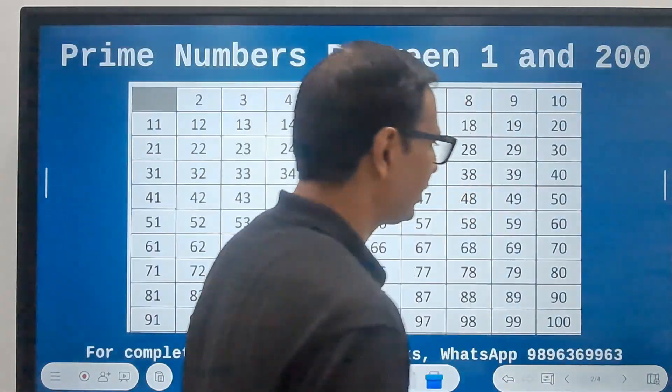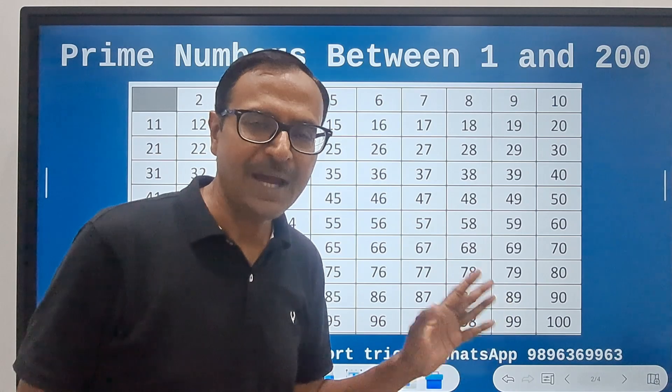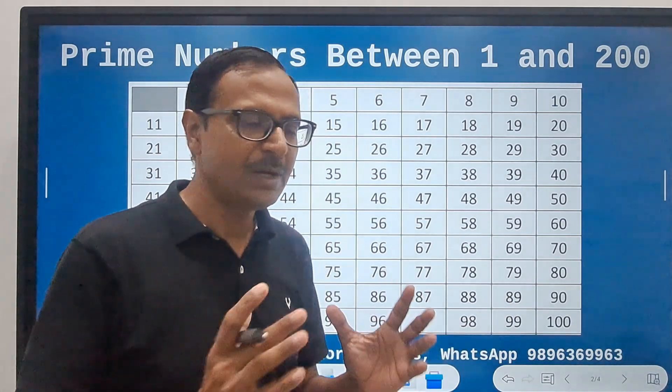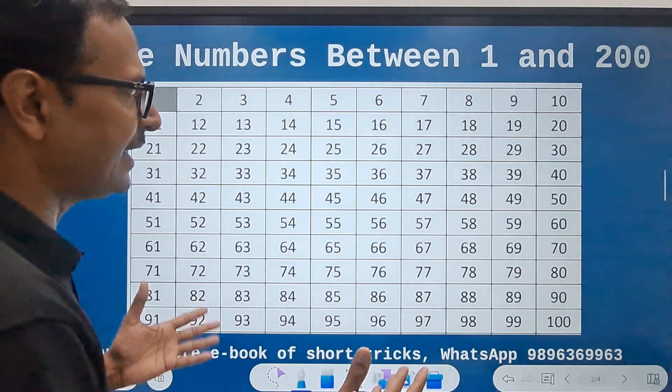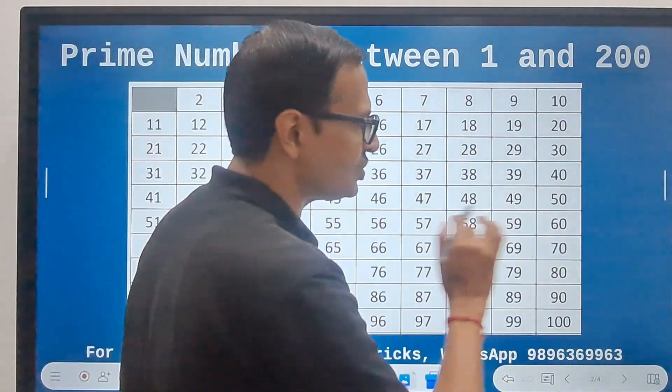Let's first talk about the numbers 1 to 100. As you can see a grid here, I have taken up 100 numbers, the first 100 natural numbers, and I have written them in rows of 10 each.